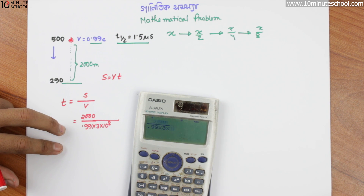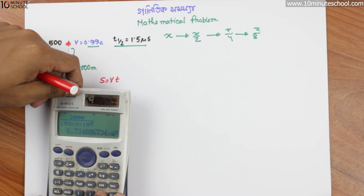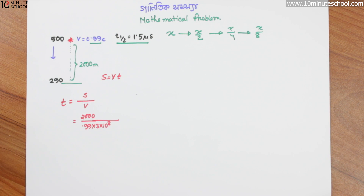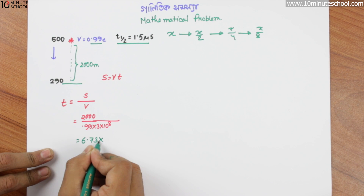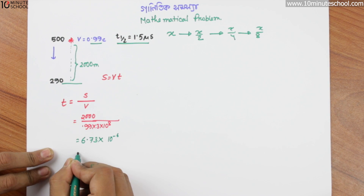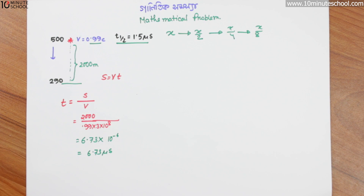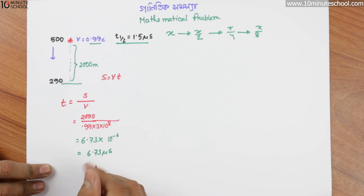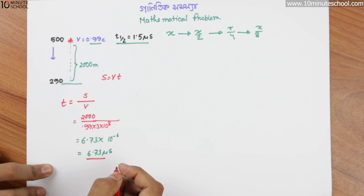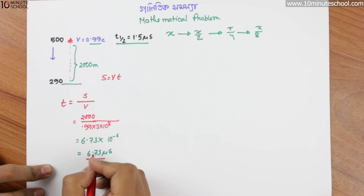0.99 into 3 into 10 to the power 8 gives 6.73 into 10 to the power minus 6 — that is 6.73 microseconds. How much is the half cycle?